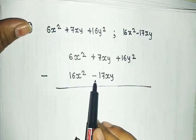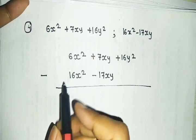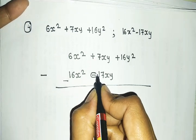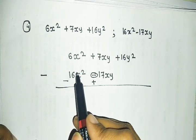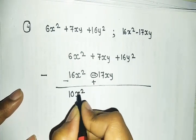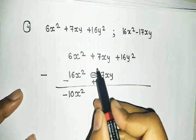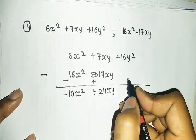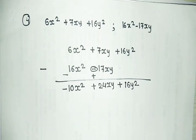Note that when subtracting, the signs of the second expression change — where there is plus, it becomes minus, and where there is minus, it becomes plus. So 16x² becomes minus 16x². Now 6 minus 16: plus minus becomes minus, and the bigger number is 16, so minus 10x². The two xy terms are plus 7xy and plus 17xy, giving plus 24xy. And 16y² plus 0 is plus 16y². My answer is minus 10x² plus 24xy plus 16y².